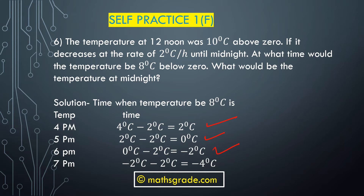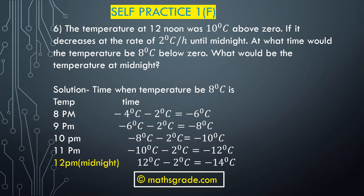At 7 PM: minus 2 minus 2 equals minus 4 degrees Celsius. We need to find when the temperature reaches minus 8 degrees Celsius. At 8 PM: minus 4 minus 2 equals minus 6 degrees Celsius. Then at 9 PM: minus 6 minus 2 equals minus 8 degrees Celsius. So the temperature reaches minus 8 degrees Celsius at 9 PM.